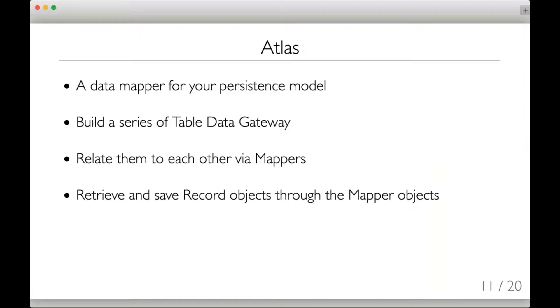So this is where Atlas comes in. Atlas is a Data Mapper for the persistence model, not for the domain model. With Atlas, what you end up doing is you build a series of table data gateways, one for each table, then you build a layer of mappers that define the relationships between those tables. Then you use the mappers to retrieve record objects that are composed of a master table row and then any other records that are related to that row through that mapper.